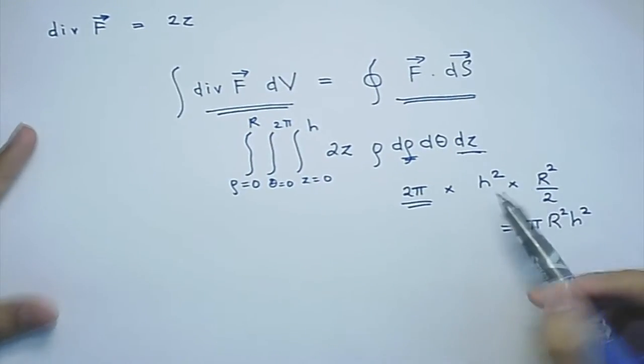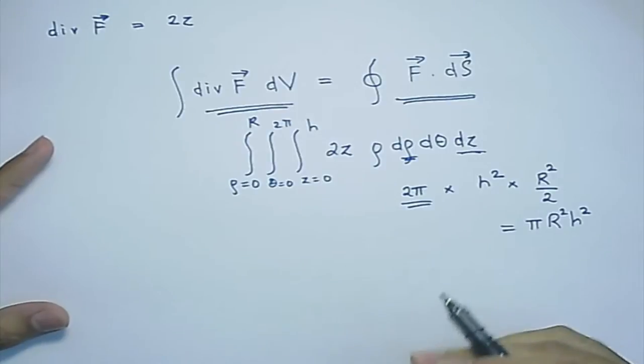As you have seen, computing the integral using the divergence theorem is much simpler than directly computing the flux. In complicated cases, computing the volume integral of a scalar field is much easier than finding the dot product of a vector field over a potentially messy surface. That is the first question done.